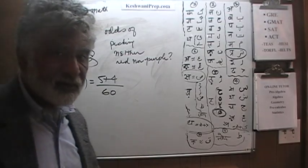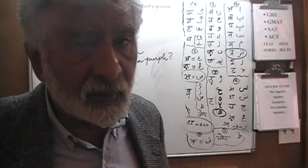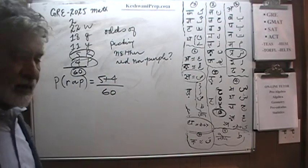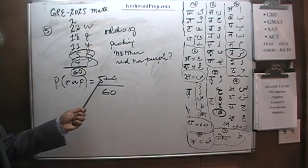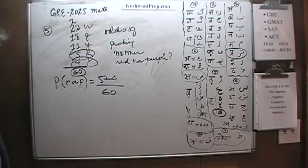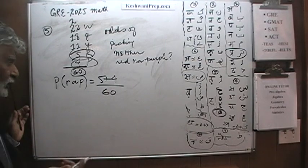You have to understand the numbers are given in the problem in the exam for a reason. There is a reason why it adds up to 5 and 4. 5 plus 4 is 9, 9 divided by 60. Don't worry about 9 divided by 60.